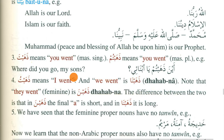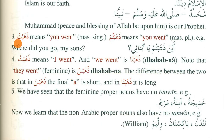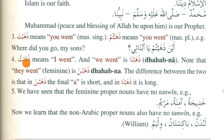Next you will learn these verb forms: 'dhahabta' — you went (masculine singular); 'dhahabtum' — you all went (masculine plural). You need to memorize these two words as well. Then 'dhahabtu' — I went; 'dhahabnaa' — we went; and 'dhahabna' — they went (feminine plural). You need to memorize their meanings as well.